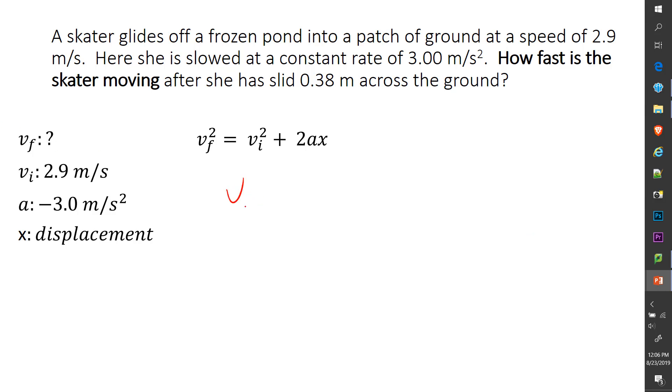So let's solve for this. VF squared, I want VF alone, not VF squared, equals VI squared plus 2Ax. I do know my displacement is 0.38. Let's go ahead and solve. VF equals square root of VI was 2.9 squared plus 2 times a negative 3 times 0.38. All that is going to be under the square root.